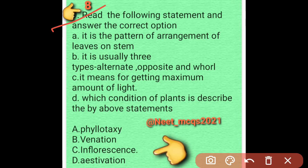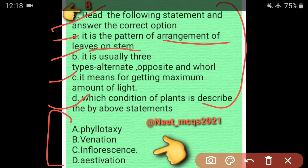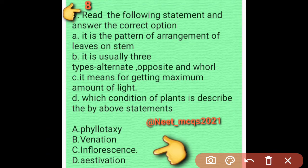Question 7: Read the following statements — Statement 1: it is the pattern of arrangement of leaves on stem. Statement 2: it is usually of three types — alternate, opposite, and whorled. Statement 3: it means getting maximum amount of light. Which condition of plants is described by the above statements? The correct answer is phyllotaxy. Option A is correct.